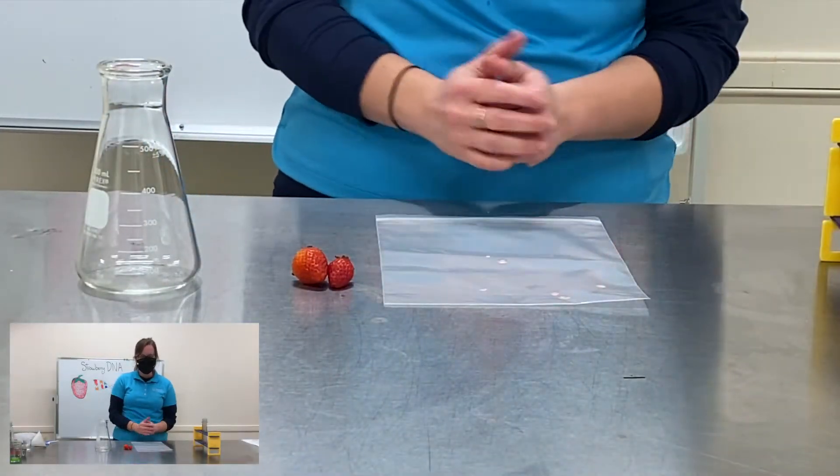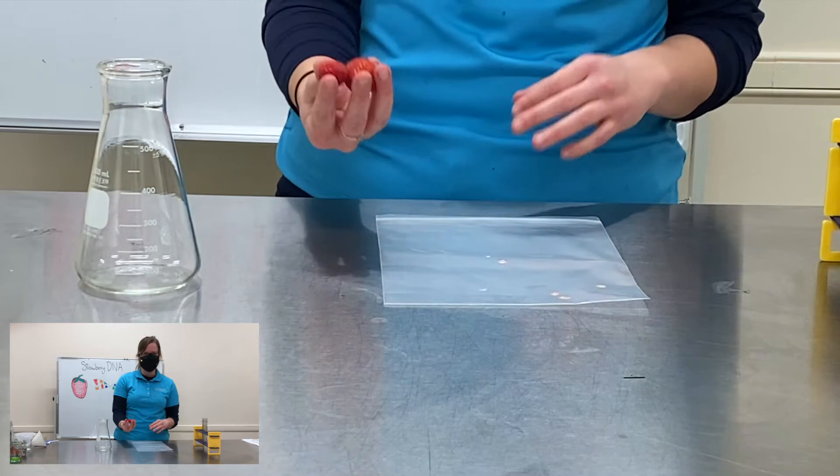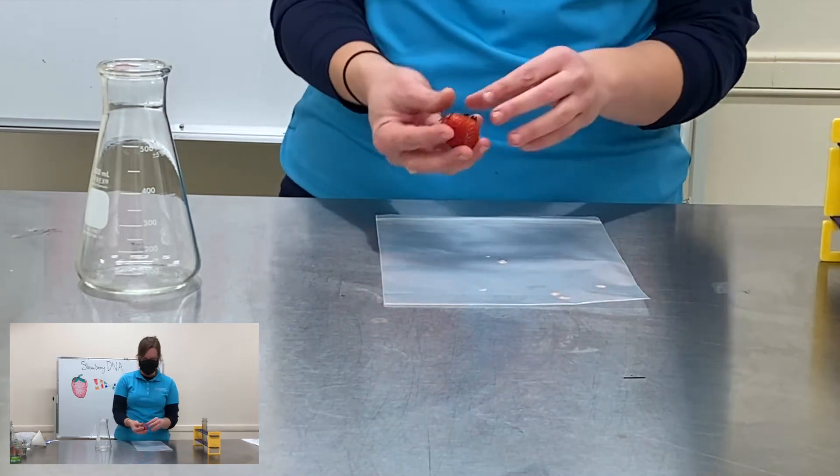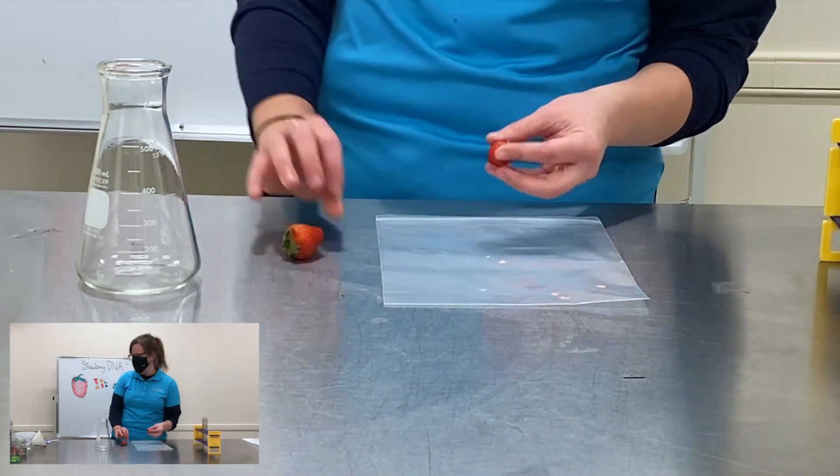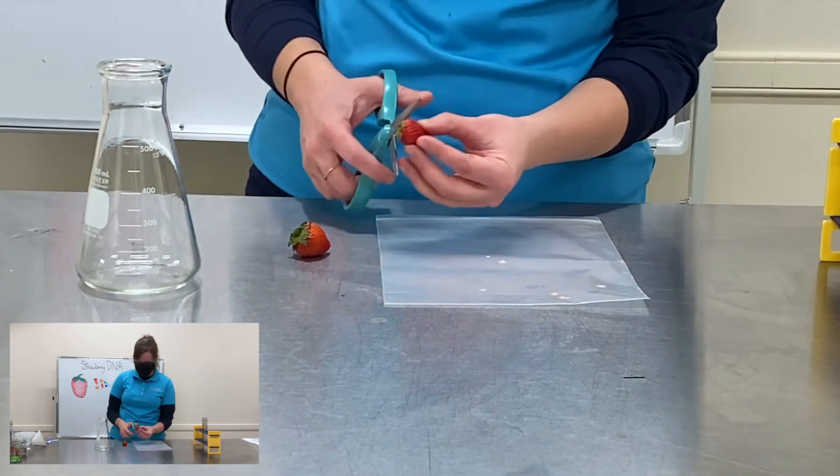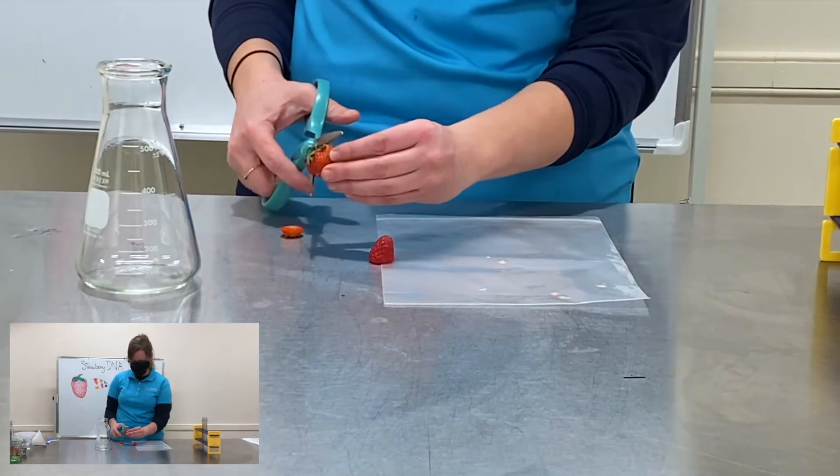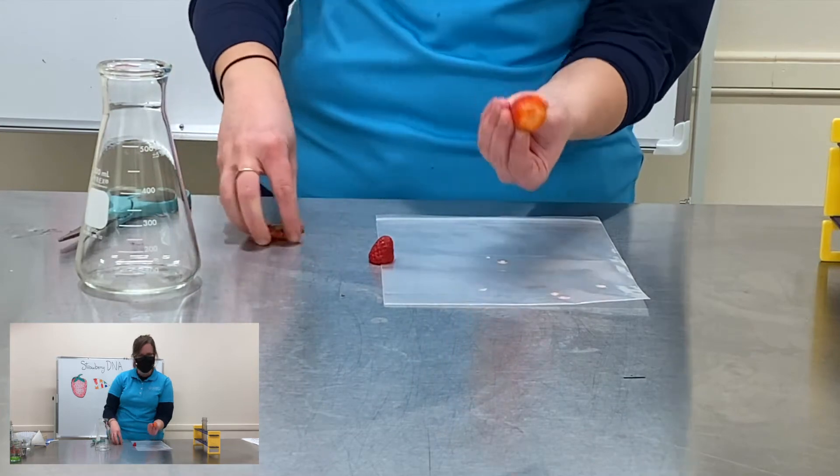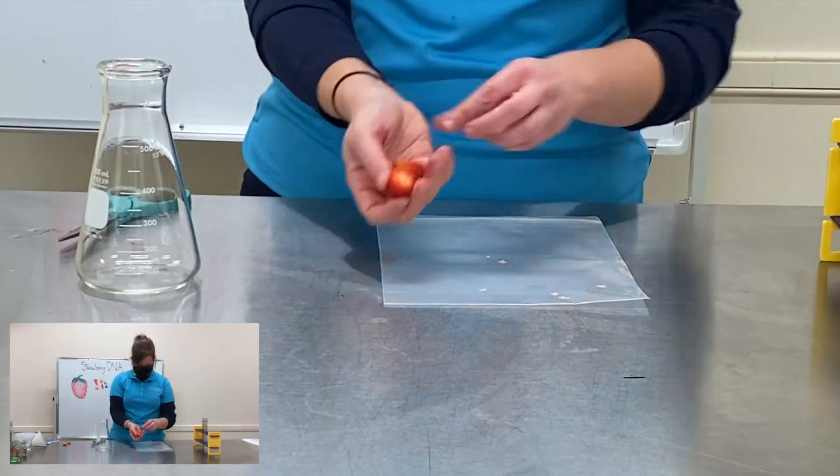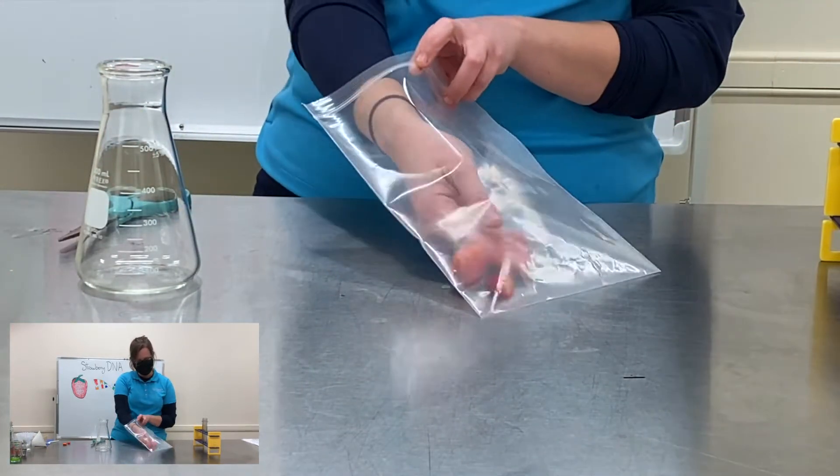So the very first thing you need to do is take your fresh strawberries and then with an adult friend's help you need to remove the green stem. So your adult friend can help cut that off or I'm just gonna use a pair of scissors here at the museum. I just cut the green tops off. Just got my strawberries. I'm gonna put them in my bag.